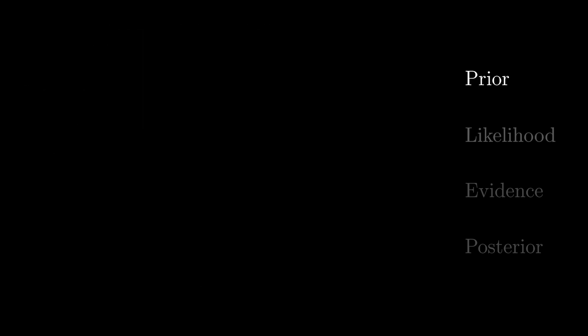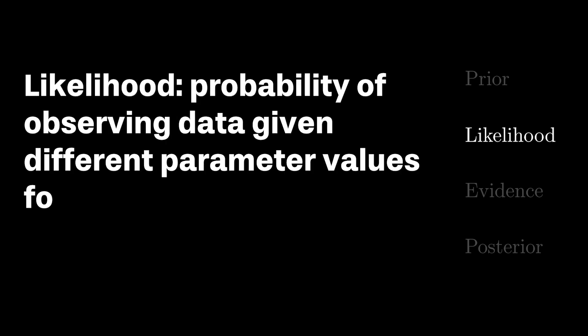Now that we've defined our prior, let's compute the likelihood of observing our data for each plausible value for p. We can refer to this as a likelihood function, which refers to the chance of observing some set of data given different parameter values. Before plotting our likelihood function, let's work out one numerical example.